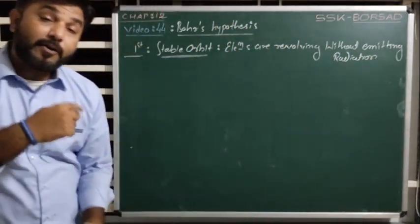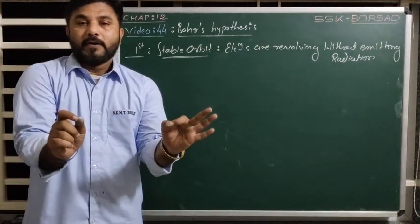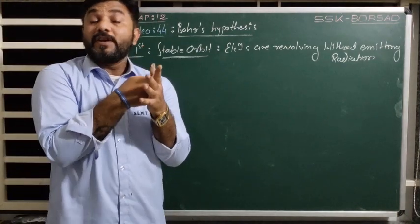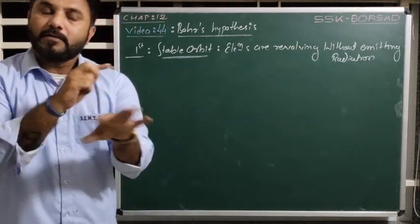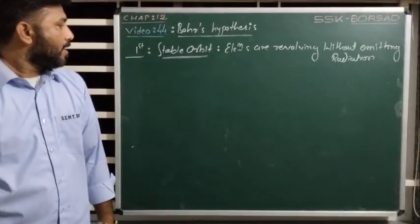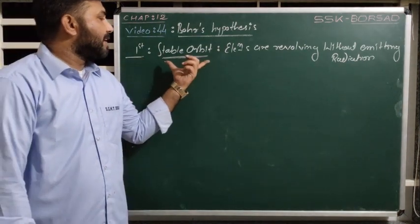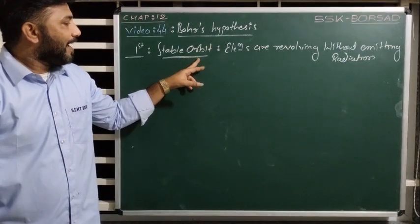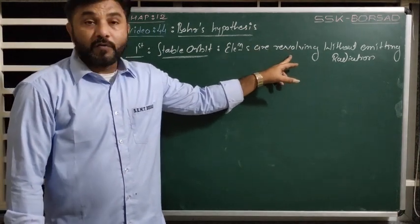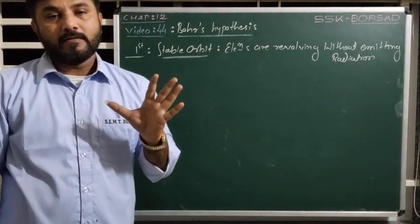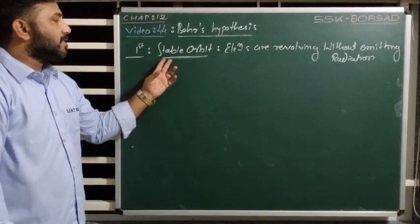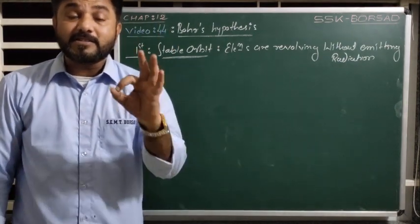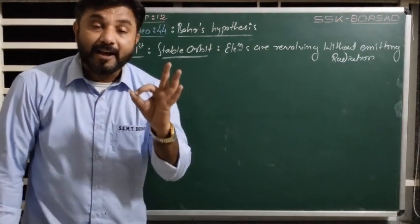Stable orbits are the orbits in which electrons revolve without emitting radiation. The electrons revolving in stable orbits do not emit any radiation, so the chances of collision of the electron with the nucleus are removed. The orbit in which electrons revolve without emitting radiation — such orbits are known as stable orbits, and the electrons revolving without emitting radiation are known as stable electrons.